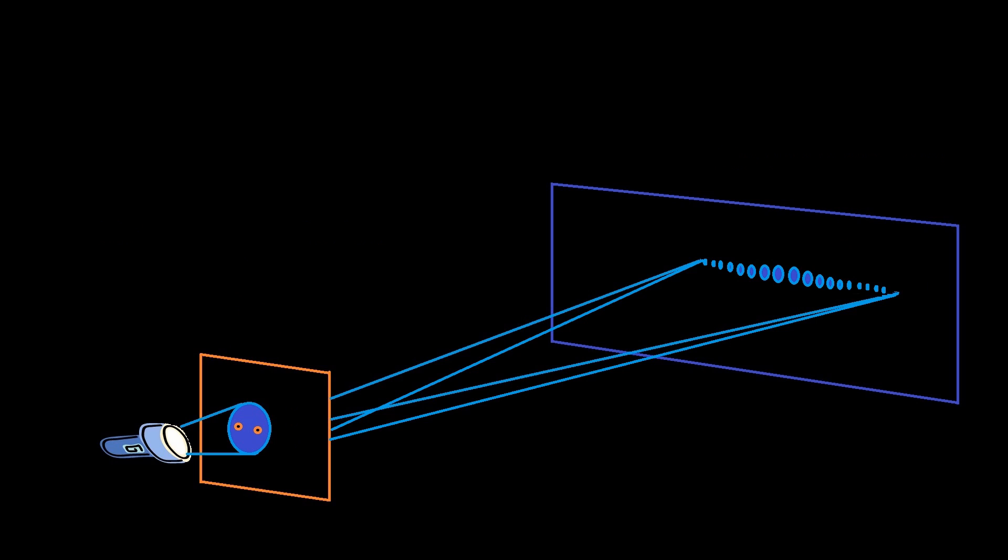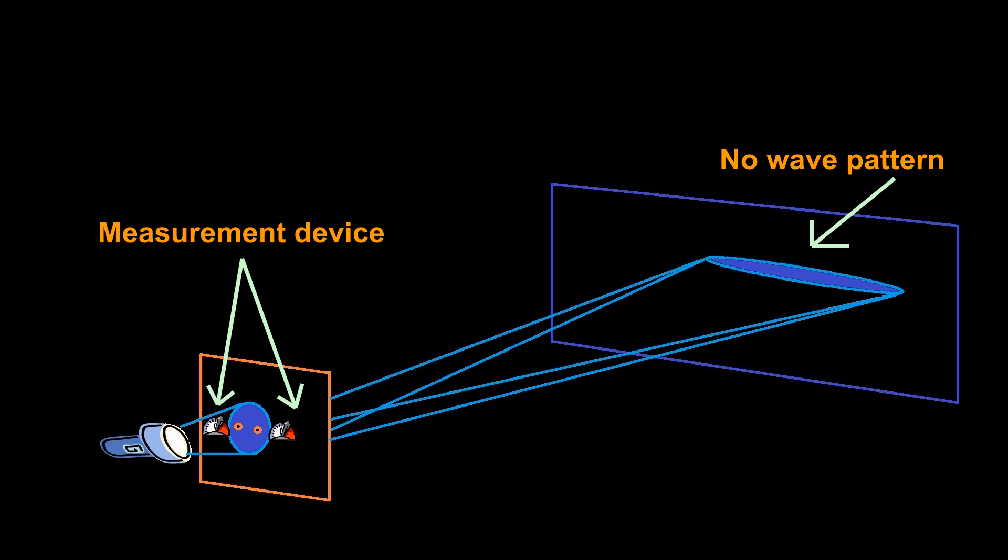In the double-slit experiment, no measurement is made, so the photons pass through both slits and produce interference pattern. If we make a measurement, meaning if we observe it, then the interference pattern disappears.